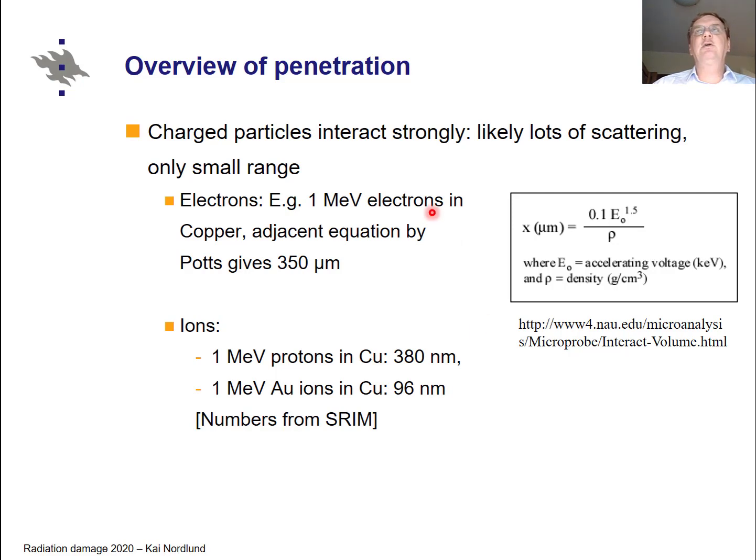And then if you have charged particles, they interact strongly with any other charged particle, so one will have lots of scattering and much poorer penetration. So for instance, for electrons, MeV electrons have a range in copper of 350 micrometers with this simple equation which can be used to estimate electron mean ranges. And ions on the other hand, they have a much much smaller ranges. So 1 MeV protons in copper would have a range of 380 nanometers, 1 MeV gold in copper 96 nanometers. So we see that while neutrons could go tens of centimeters in and gammas millimeters, electrons go micrometers and then ions only nanometers or hundreds of nanometers. So there really is a huge difference in these penetration depths.